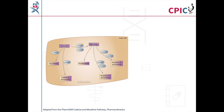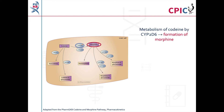This image is adapted from the PharmGKB codeine and morphine pathway. A link to the original pathway is provided in the description below this video. Codeine is metabolized in the liver to form a number of metabolites. Central to this guideline is the metabolism of codeine by CYP2D6 to morphine. Morphine is the most active metabolite of codeine and provides the analgesic effect of codeine.